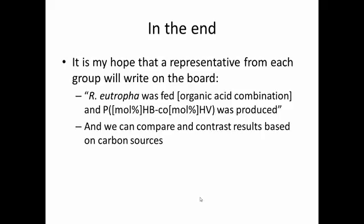In the end, it is my hope, and it is my hope we get to this at the end, that you've done almost everything and are in a place to be able to say this, that one representative from each group will end up writing on the board what Ralstonia eutrophia was fed, what organic acid combination it was, and what monomer percentage PHA was produced. So P mole percentage hydroxybutyrate, co-mole percentage hydroxyvalerate was produced. And we will compare and contrast results based on what combination of carbon sources were fed.